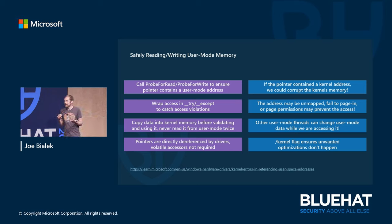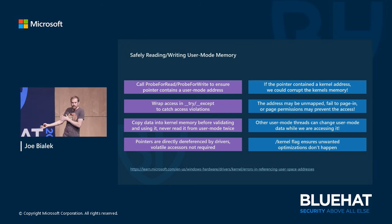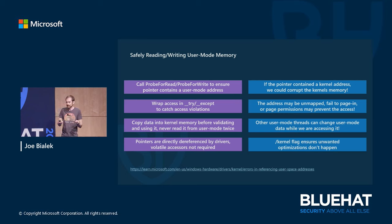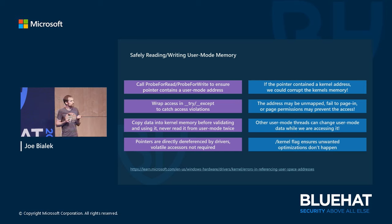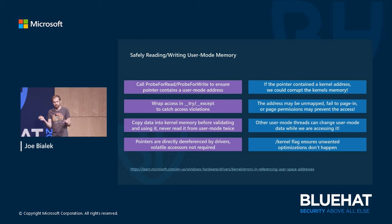Whenever you interact with user mode data, it is completely untrusted. If you need to validate that data, you must first make a local copy in the kernel — because if you validate while the data is still in user mode memory, user mode's other threads can change it after validation. So the pattern is: copy locally, validate it, then use it. That way, the data you validate is the data you use. Interestingly, drivers on Windows are free to directly dereference user mode pointers as long as they follow these steps — inside SEH scope and with probing.